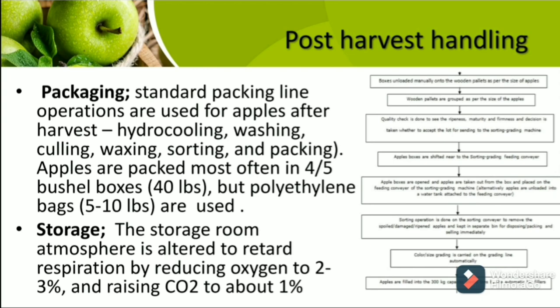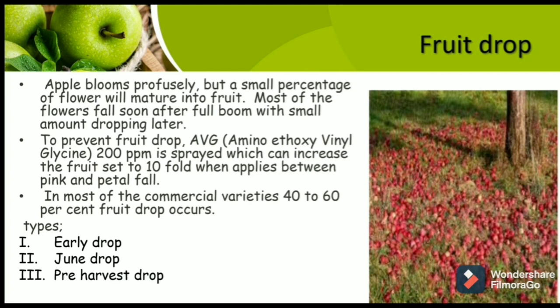Regarding fruit drop: Apples bloom profusely, but a small percentage of flowers will mature into fruit. Most flowers fall soon after full bloom, with a small amount dropping late. To prevent that, AVG or aminoethoxyvinylglycine at the rate of 200 ppm is sprayed, which can increase fruit set to 10 folds when applied between pink and petal fall. In most commercial varieties, 40 to 60 percent of fruit drop occurs at the following times: early drop, June drop, and pre-harvest drop.